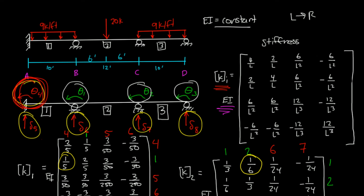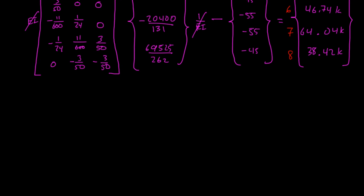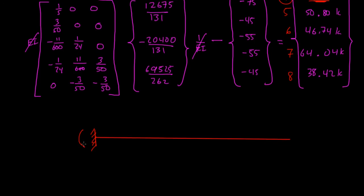So if I were to redraw this diagram, I'd have a fixed end here at A, and it would have a moment of this 94.35 kip foot. So this would be 94.35 kip foot. Then you have a reaction here at the 5th degree of freedom, 50.80 kips. Then you had a roller here, a roller here, and a roller here.